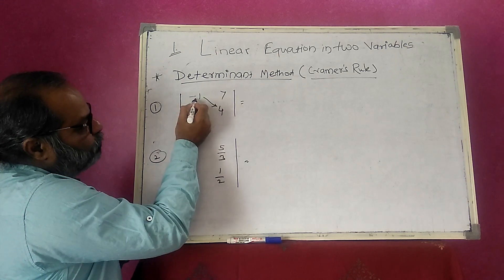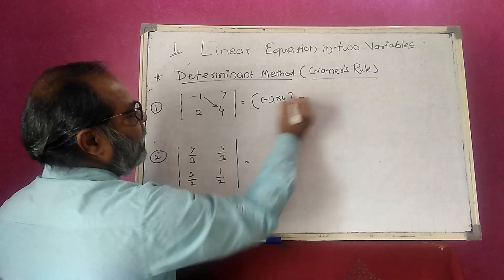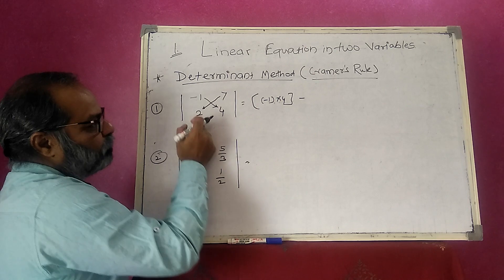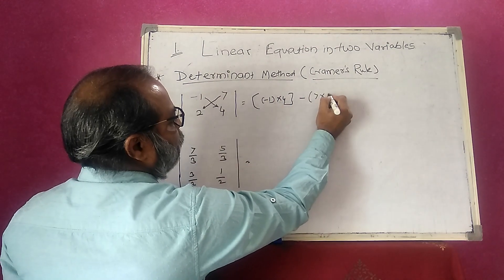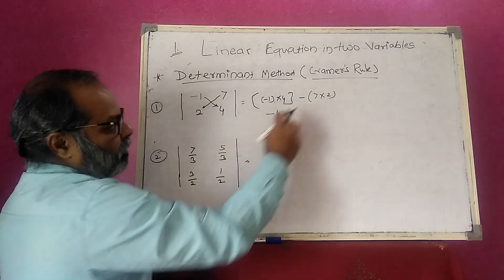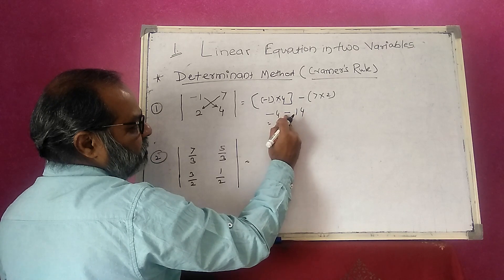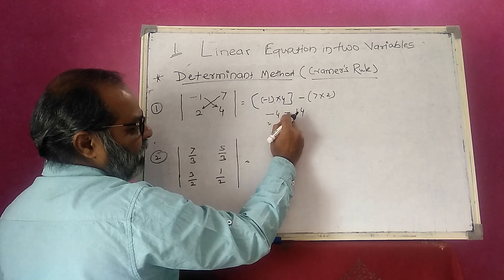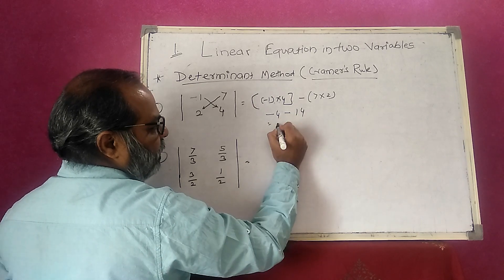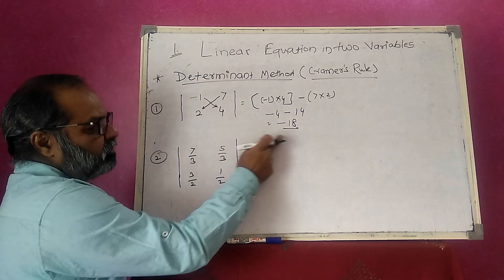Multiply minus 1 by 4: that gives minus 4. Then subtract 7 times 2, which is 14. So we have minus 4 minus 14. Since both signs are the same, we add the numbers: minus 4 minus 14 equals minus 18. So the value of the determinant is minus 18.